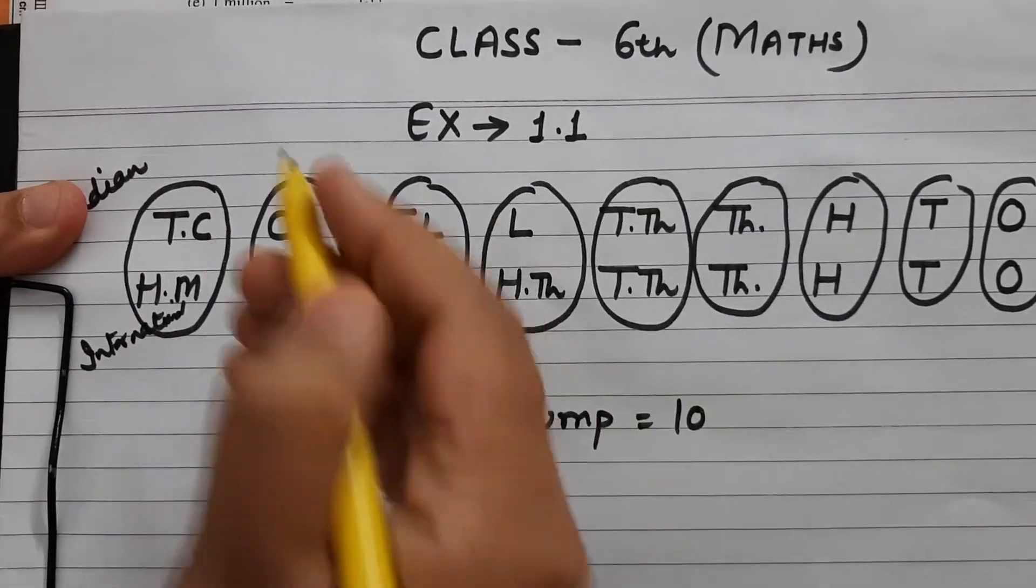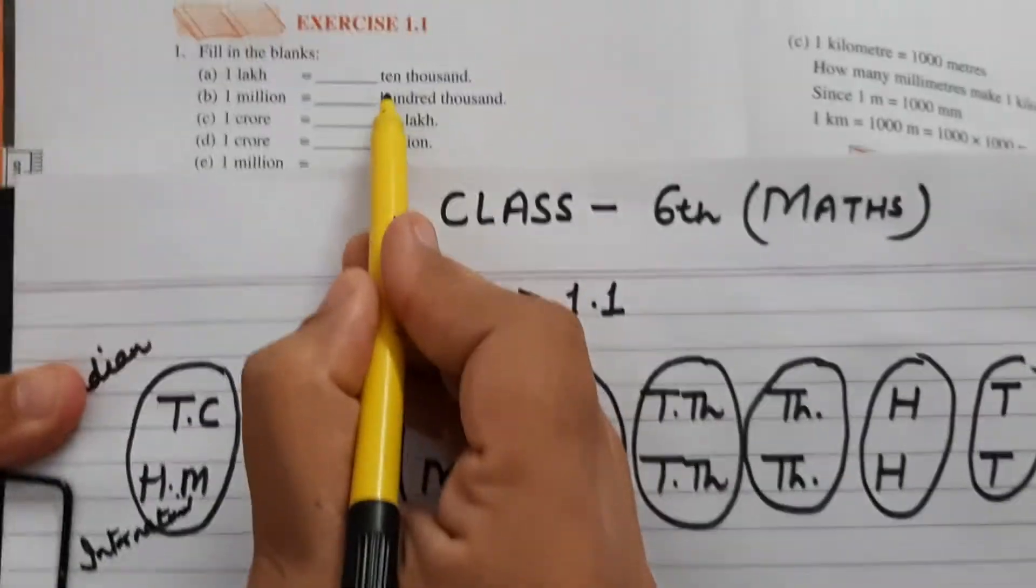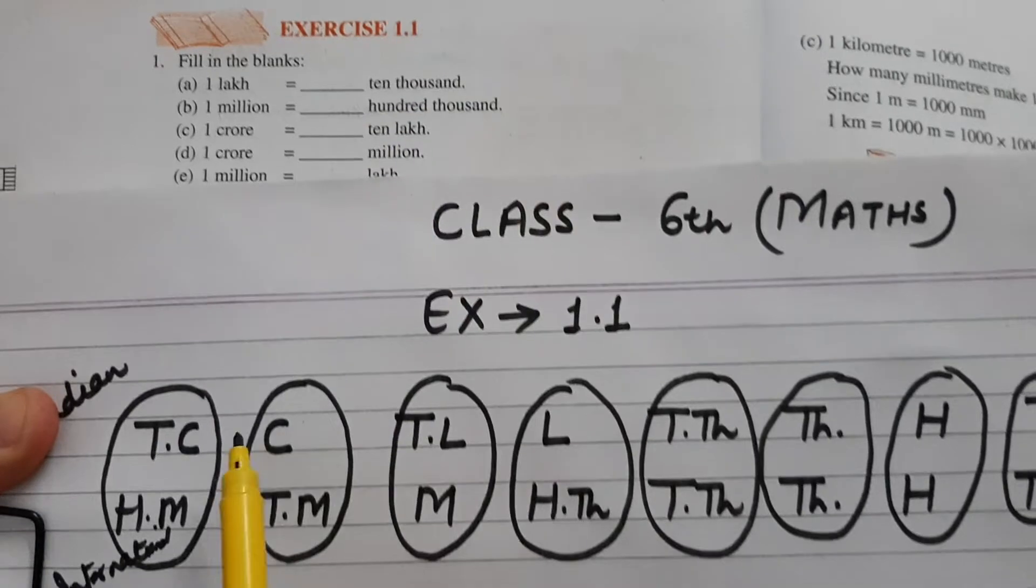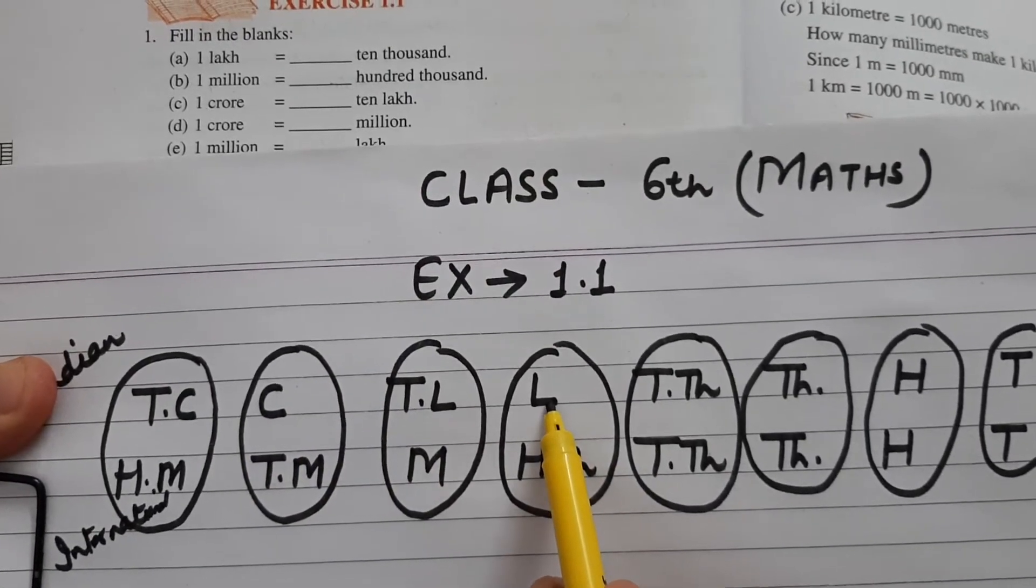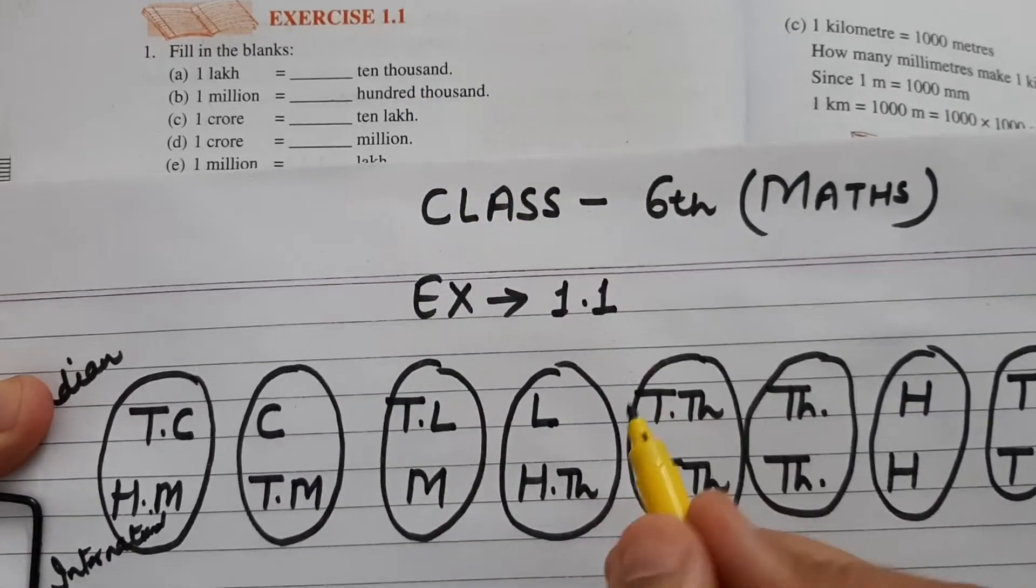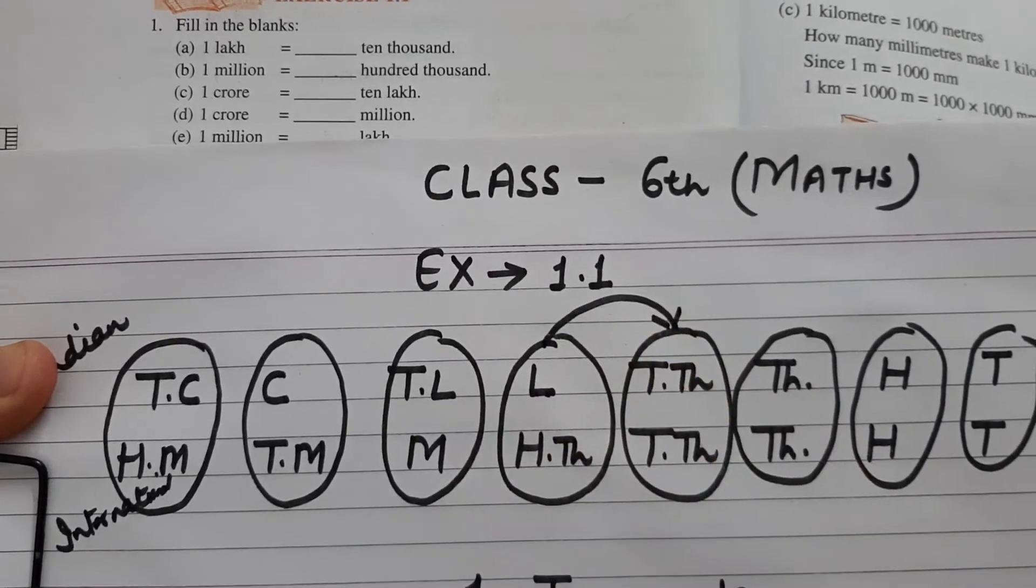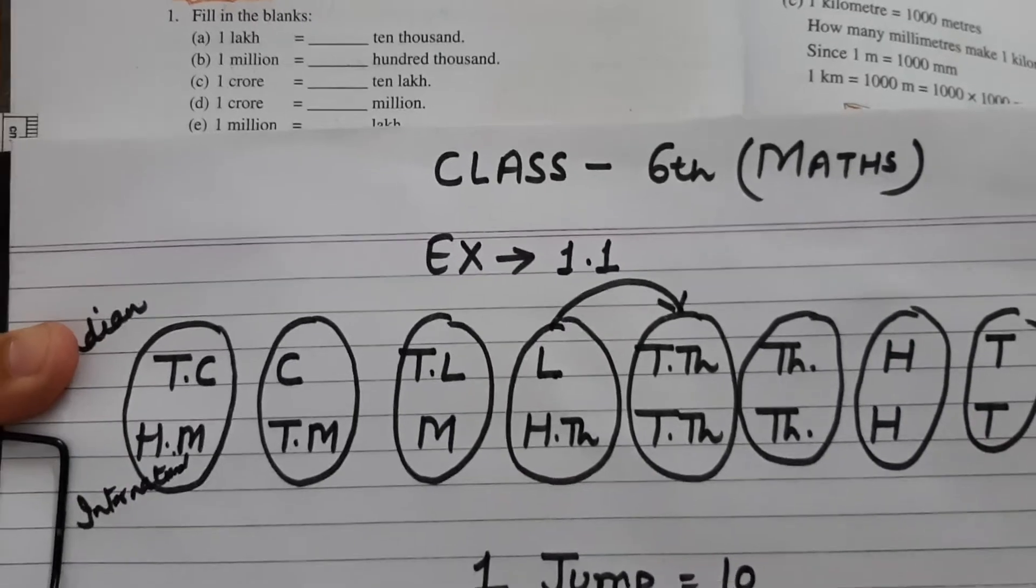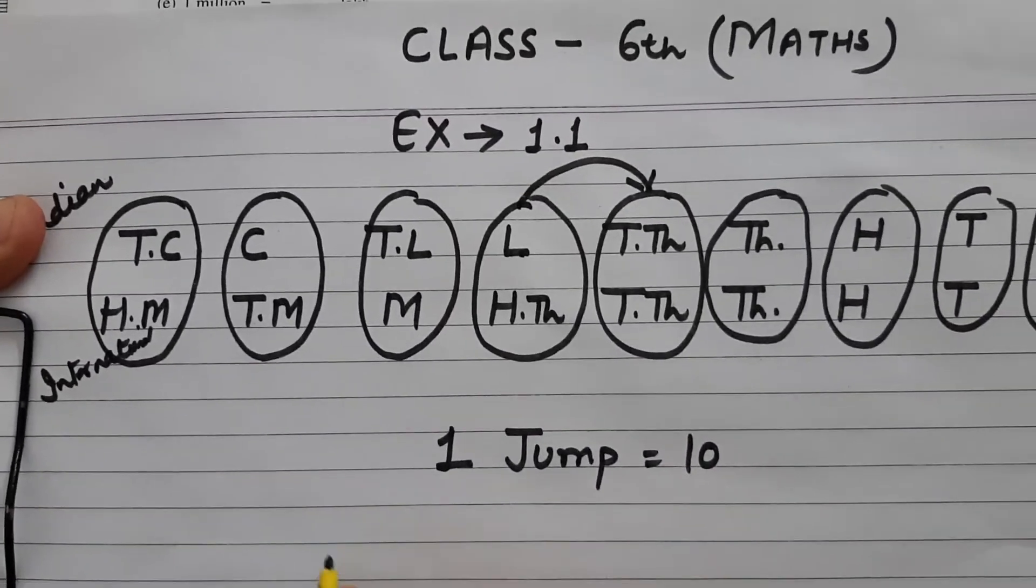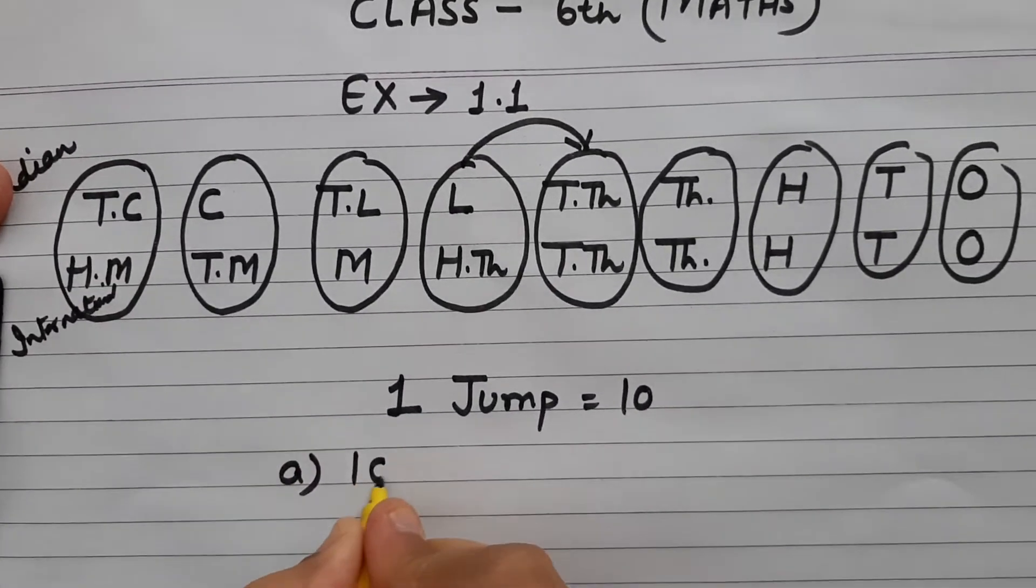आइए, first question है, one lakh equals to ten thousand. मैं lakh की तरफ जाती हूँ, ये lakhs है, और कितने ten thousand है? देखे, lakhs, ten thousand. lakhs से ten thousand में कितनी jump लगी? One. तो मैंने अभी बताया, one jump equals to ten. तो a part का answer है ten.